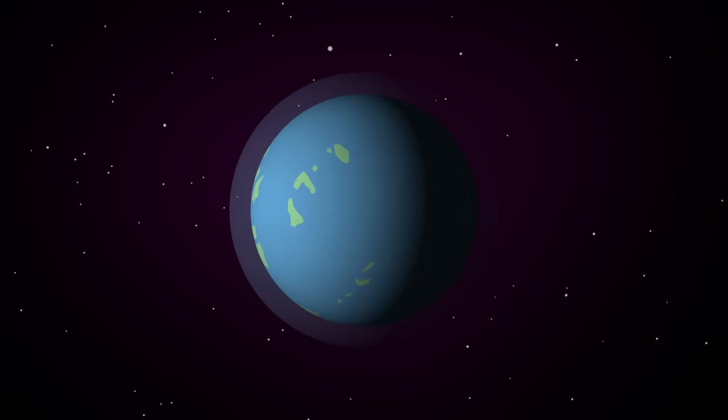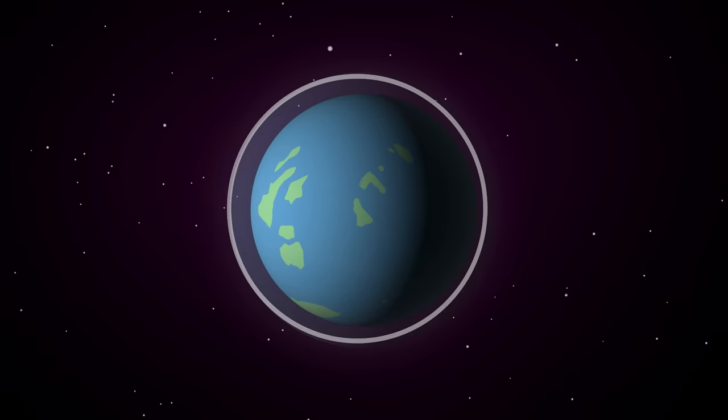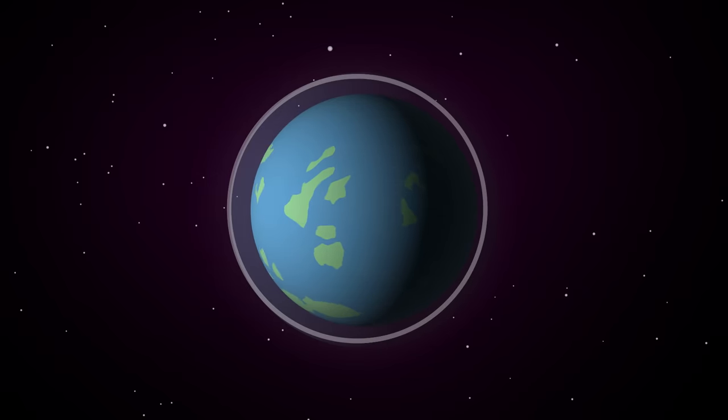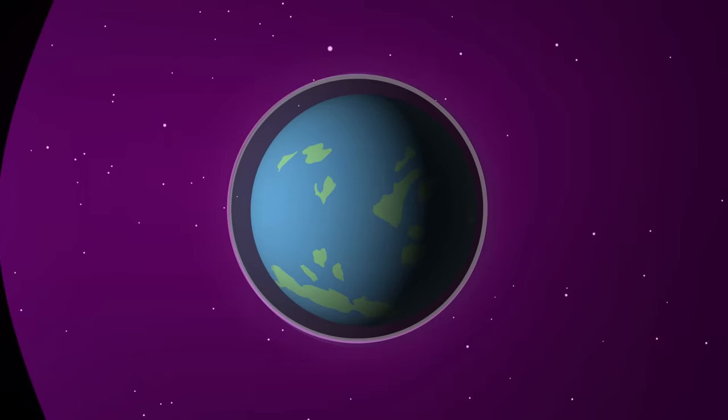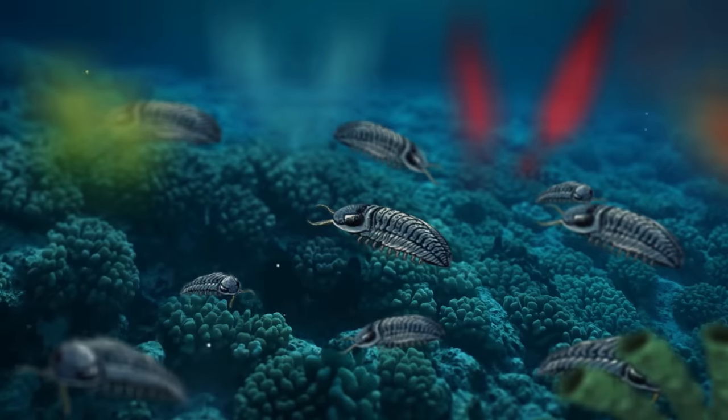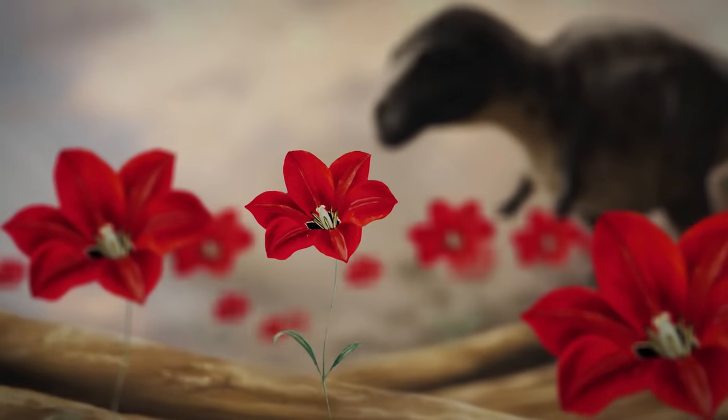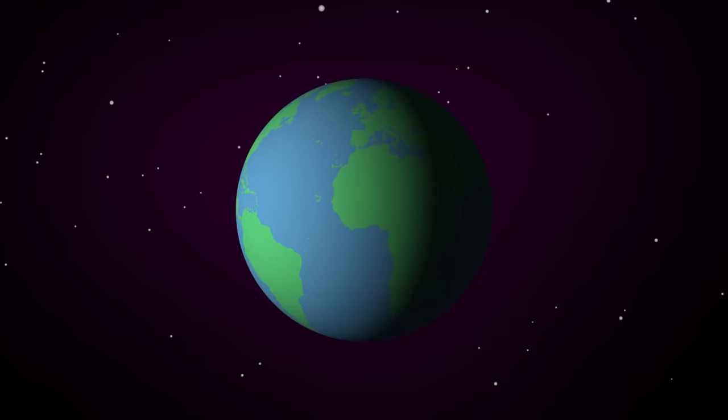Oxygen was now abundant in the air and water, and a new thing also appeared in the atmosphere, an ozone layer. This coating of molecular oxygen helped block dangerous ultraviolet radiation from the sun, and suddenly new things became possible. From there, well, you know what happens. Life became more complex and awesome and wonderful, and here we are.